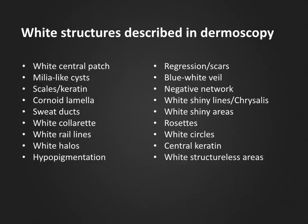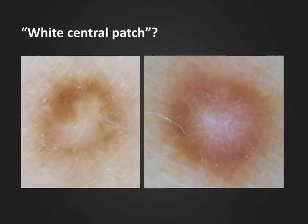Here is a list of local structures which have been described in dermoscopy that are white. As you can see, the list is rather long. The structures described may also be confusing, especially when metaphoric language is used. Sometimes the terminology we use when describing white structures will actually depend on the diagnosis we have already made. Let's look at an example.